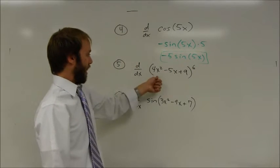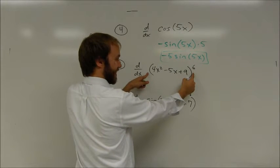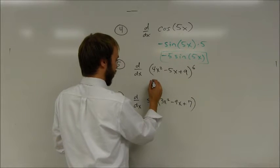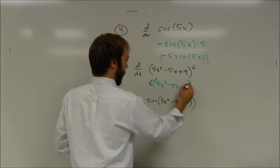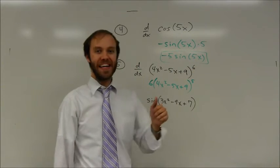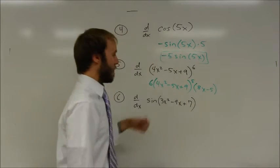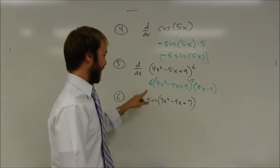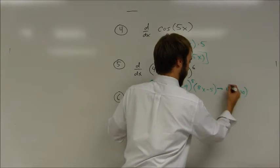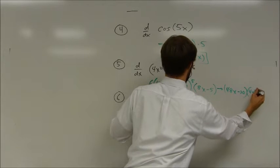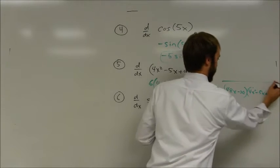Next one: I have a sixth power function with an inside function — same thing as before, I'm going to need to use the chain rule. The derivative of the outside function: this is a sixth power expression, so 6 times the coefficient of 1 gives me 6. It's going to be the same value inside parentheses, and I'm dropping my exponent by 1 to 5. But I have to remember the derivative of that inside function, which is going to be 8x minus 5. Multiplying gives 48x minus 30, times the quantity 4x squared minus 5x plus 9, all to the fifth power.